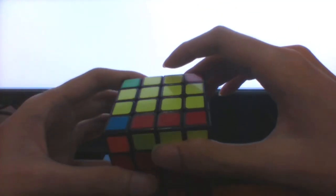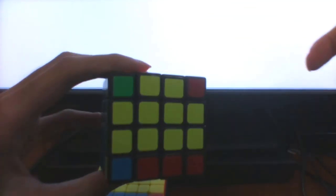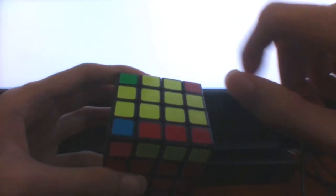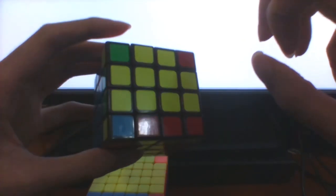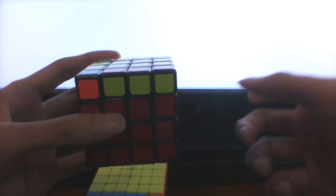So the last two cases are where the flipped edge is not in either of those two positions. So in these cases, if we do the parity ELL, we will actually end up with a Niklas which is 7 moves long. So we will just do that instead of doing anything fancy.